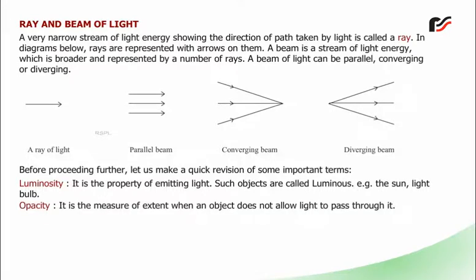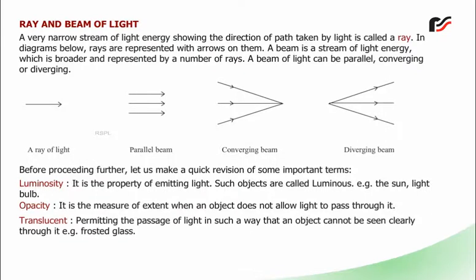Opacity: It is the measure of extent when an object does not allow light to pass through it. Translucent: Permitting the passage of light in such a way that an object cannot be seen clearly through it, for example, frosted glass.